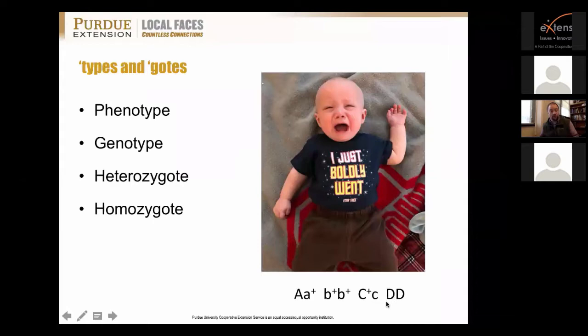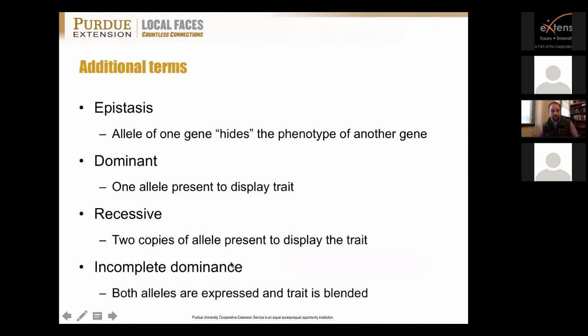This is where heterozygote and homozygote come into play. If he carries both the dominant and the recessive allele for a gene, he is a heterozygote. If he only carries the same allele — say capital D on both chromosomes — he is a homozygote. When thinking about birds and breeding strategies, understanding genotype helps anticipate or explain what is being expressed in the offspring.